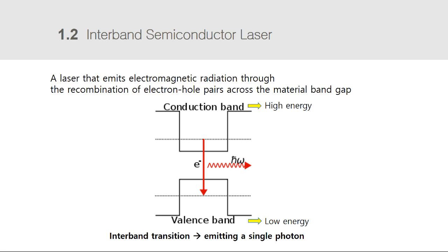Let's see how inter-band transitions work. Within a semiconductor crystal, electrons can occupy states in one of two continuous energy bands: the valence band and the conduction band. The two energy bands are separated by an energy bandgap, and between the bandgap there are no permitted states available for electrons to occupy. Conventional semiconductor laser diodes generate light by a single photon being emitted when a high-energy electron in the conduction band recombines with a hole in the valence band. Therefore, the emission wavelength of laser diodes is determined by the bandgap of the semiconductor used.